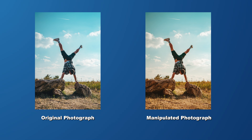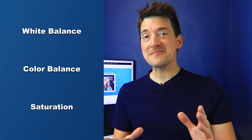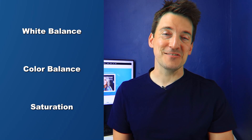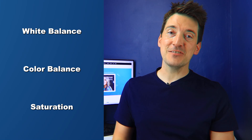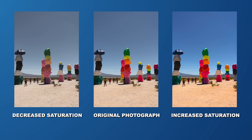By manipulating these color channels you can create a warmer or cooler overall look. And finally, let's talk about saturation. It refers to the intensity or richness of colors in an image. Increasing saturation can make colors more vibrant, whilst decreasing it can create a more subdued or muted effect. Now that we've covered the essentials, it's time to dive deeper into the world of photo color correction.